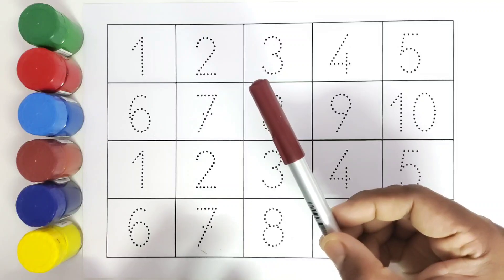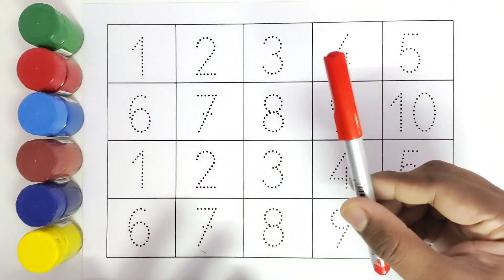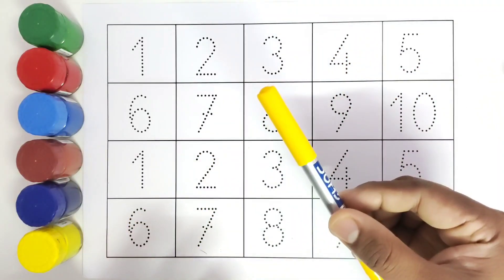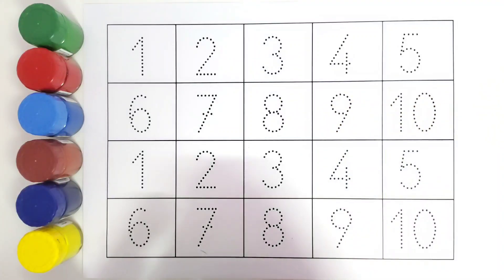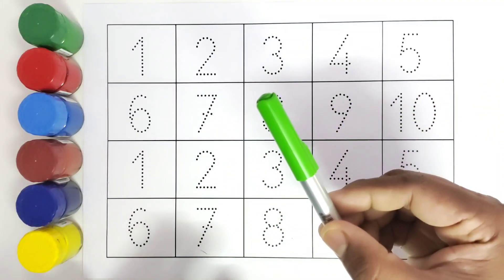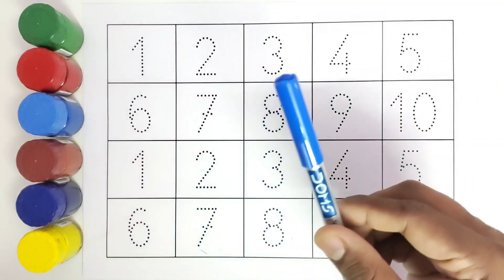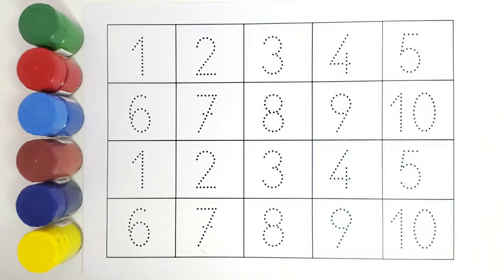This is brown color. This is red color. This is yellow color. This is light green color. This is dark blue color. Let us get started. We will color all the numbers.